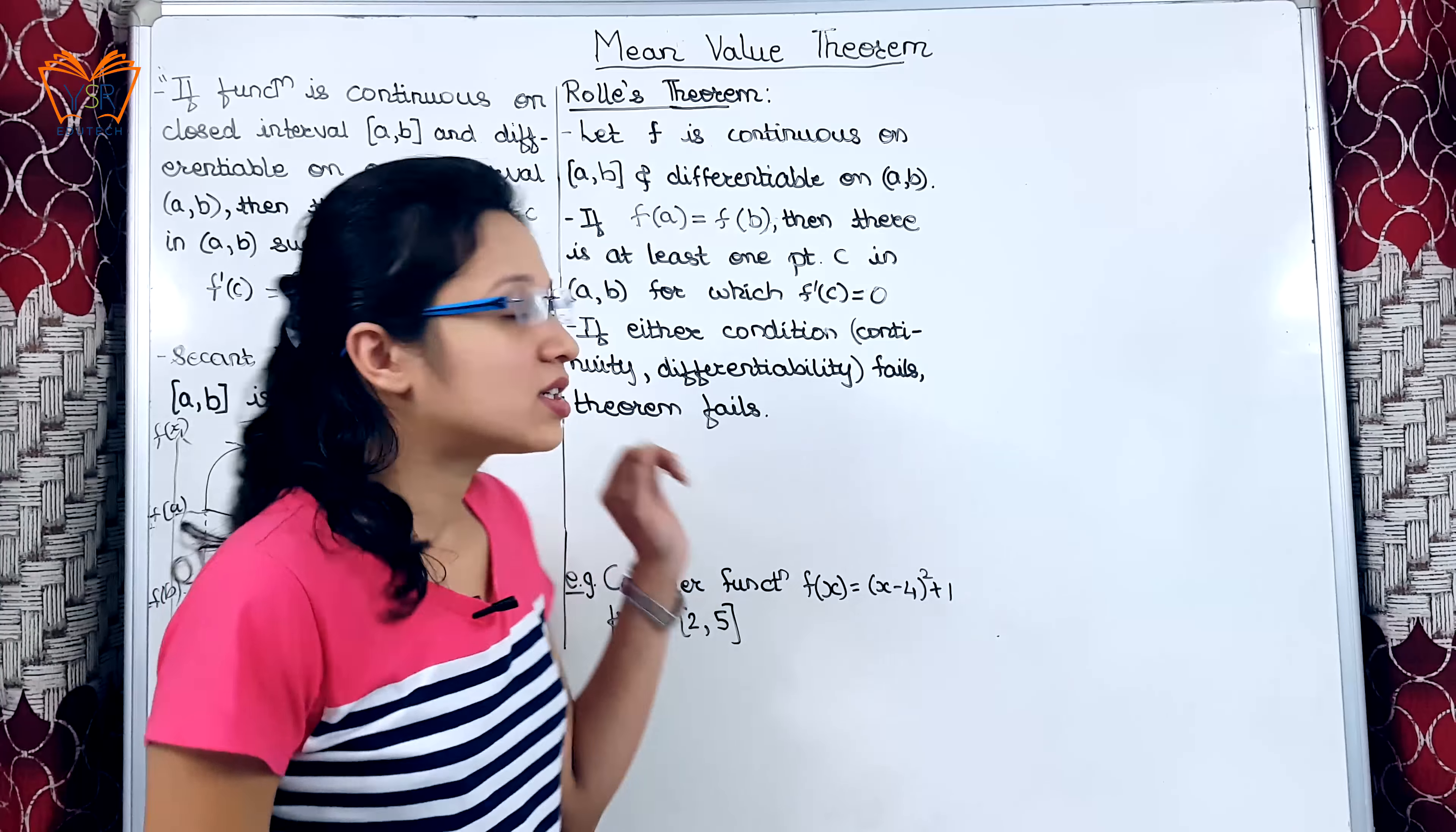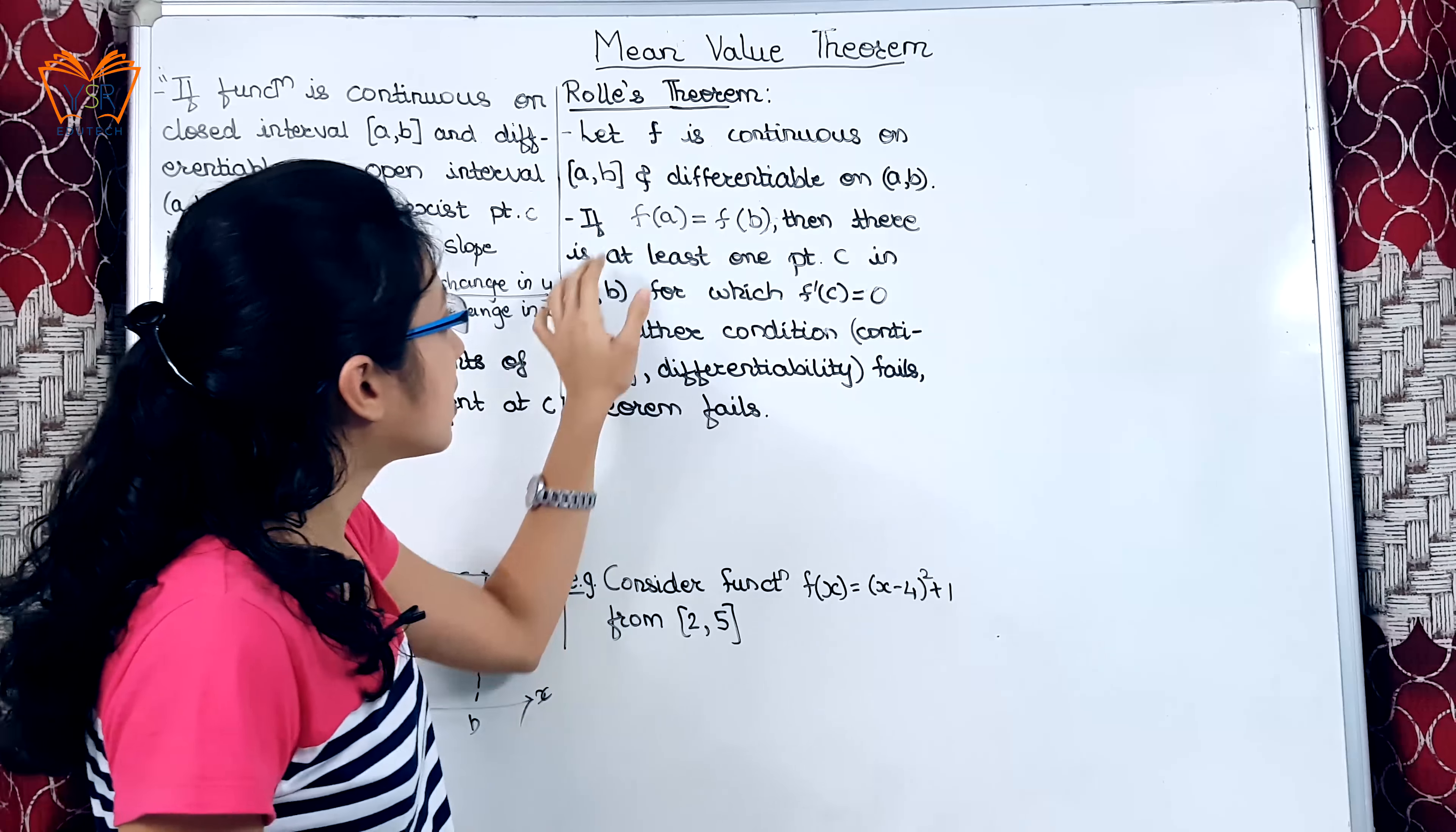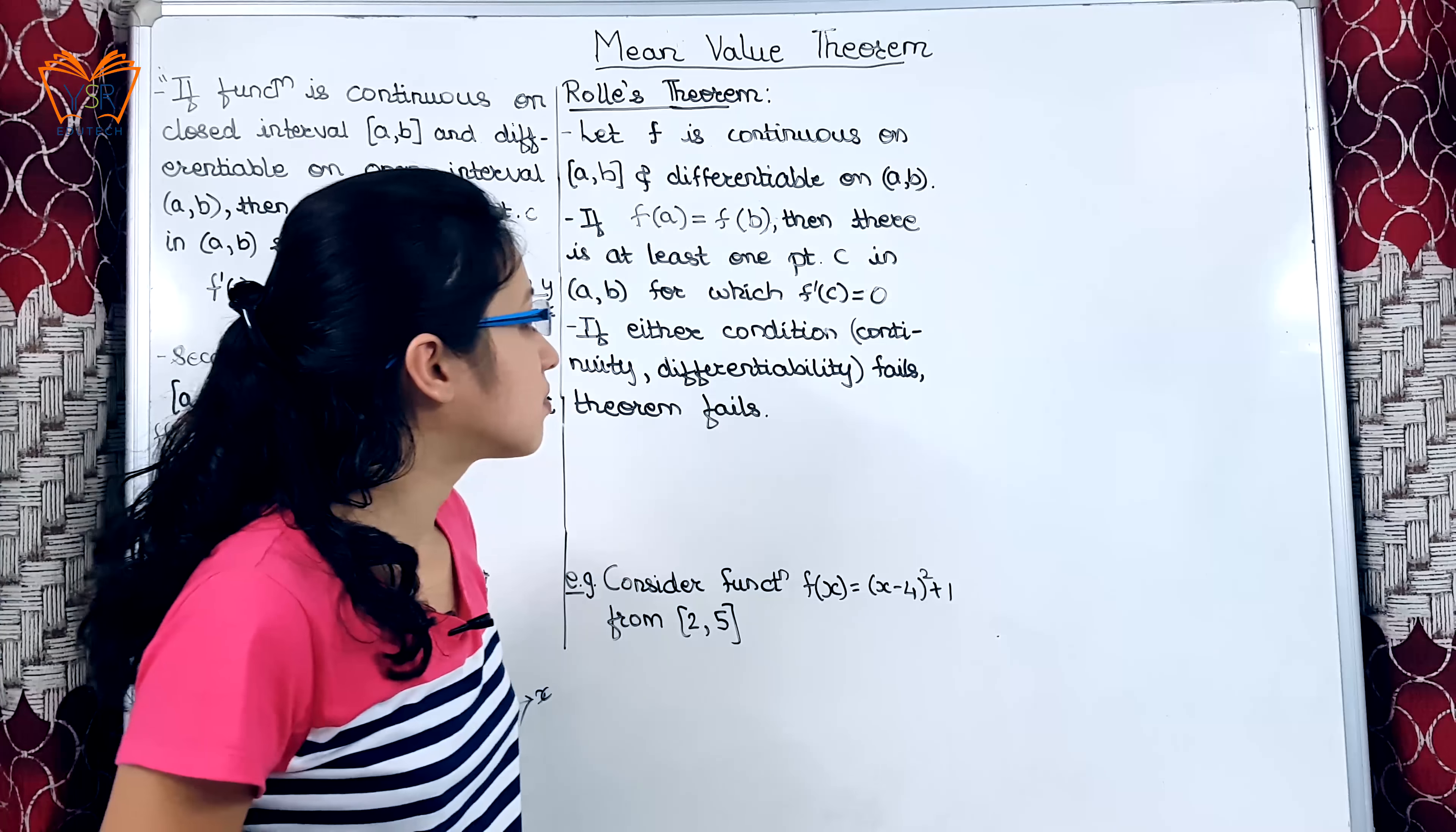Moving on to the Rolle's theorem, statement is let f is continuous on closed interval [a,b] and differentiable on open interval (a,b). If f(a) is equal to f(b), then there is at least one point c in open interval (a,b) at which f'(c) is equal to 0.